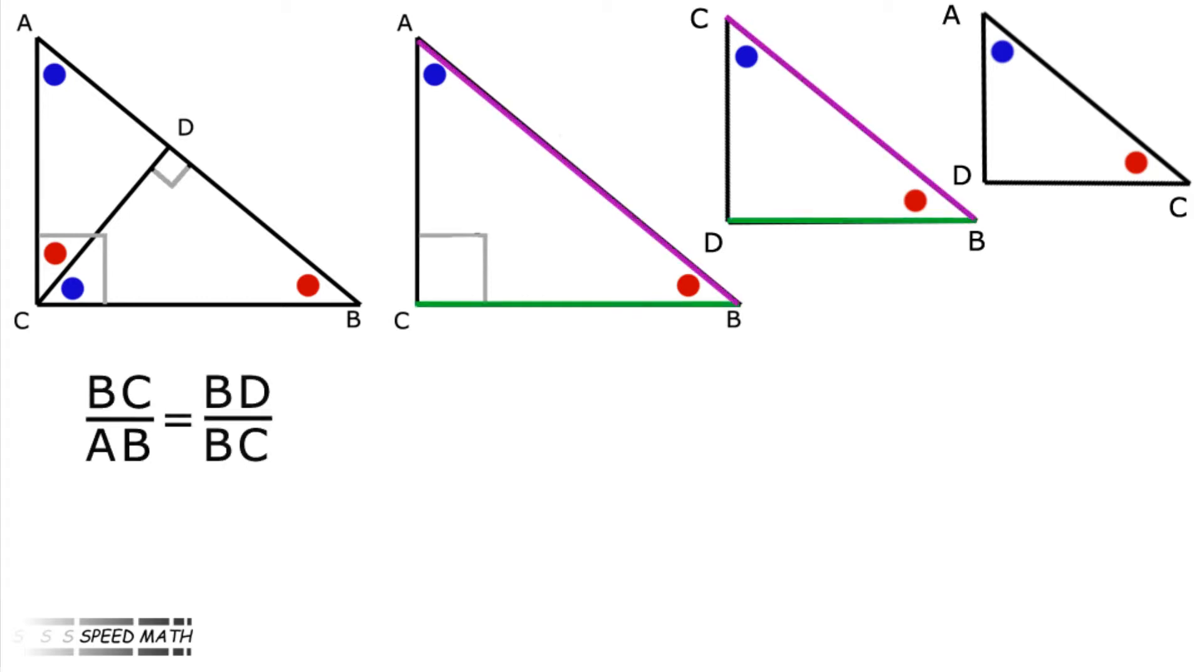Remembering that the ratio of corresponding sides gives the same number. For triangles ABC and BCD, the first two separated triangles, BC over AB on triangle ABC, the ratio of green to purple sides equals BD over BC, the ratio of green to purple sides on triangle BCD.